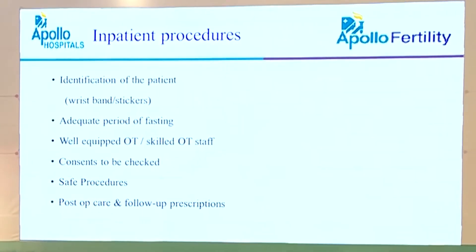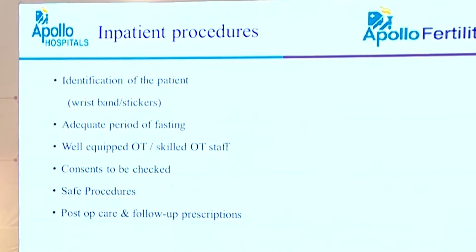For inpatient procedures, we have to identify our patients and the procedures for which they are being admitted — using wristbands, stickers, or whatever system each individual clinic uses. The identification of the patient and the procedure they are coming in for should always be clear. Adequate fasting period if anesthesia is involved, a well-equipped OT, skilled OT staff, consent to be checked in each and every case, and safe procedure planning are all required. Post-op care and follow-up prescriptions must also be followed.